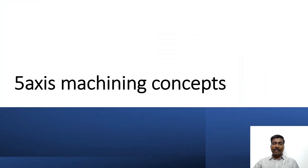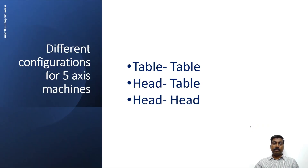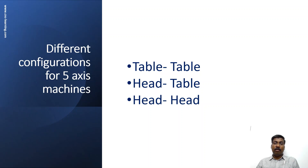First, we will talk about general 5-axis machining concepts. In my first video I explained about different configurations for 5-axis machines. Based on the rotary axis and tilting axis, 5-axis machines can be classified into 3 different types: table-table configuration, head-table configuration, and head-head configuration.